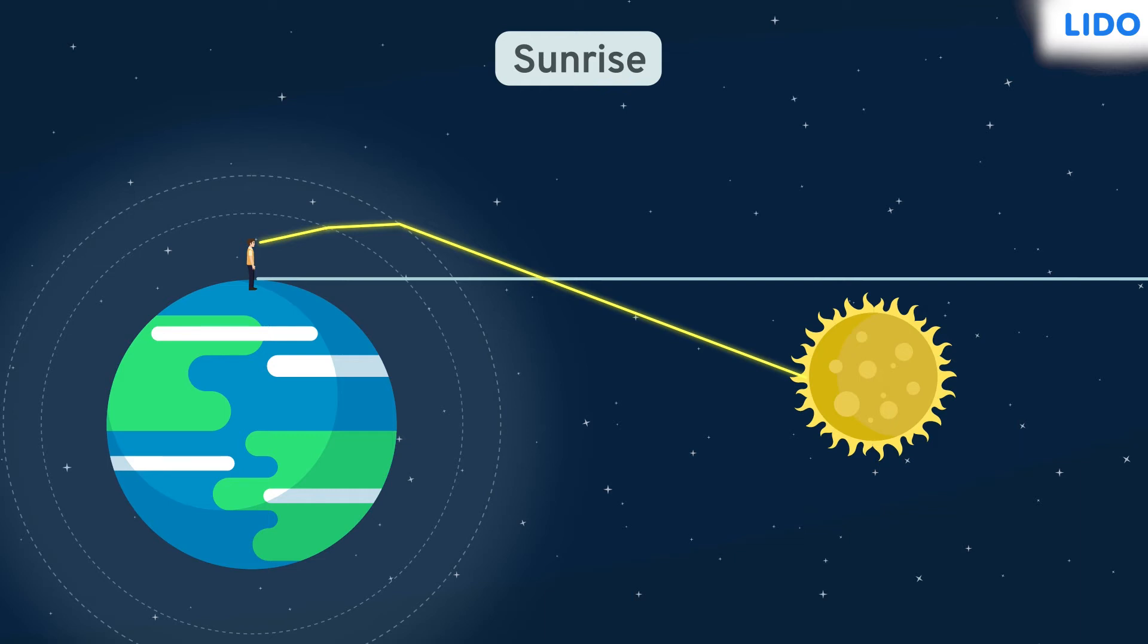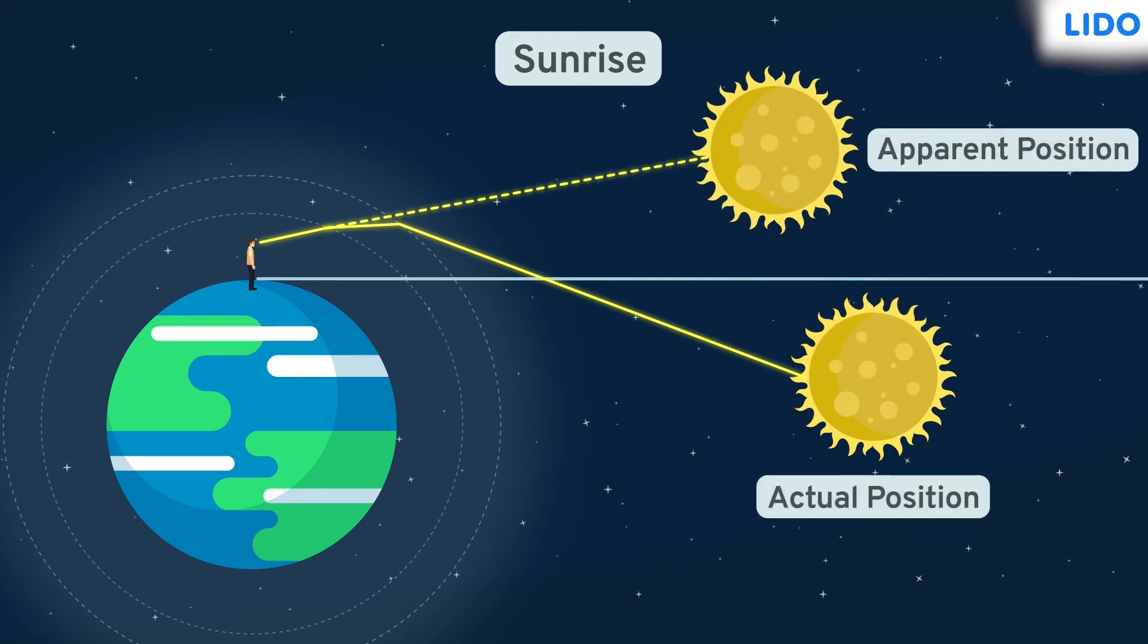Now, if we trace back the source of this bent light ray, they seem to appear from a higher position than the actual position of the sun. That is why the sun appears to have risen even though it hasn't.